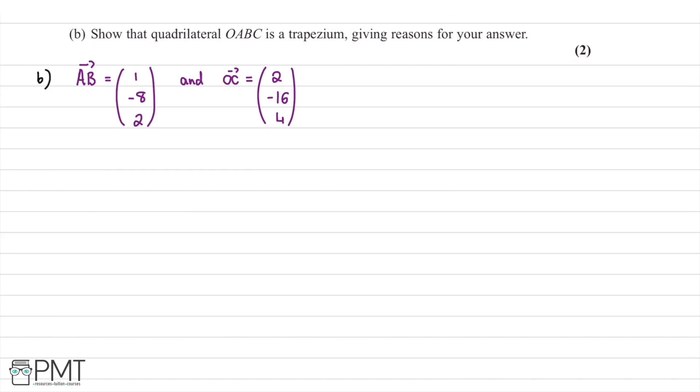In part B of this question, we're asked to show that quadrilateral OABC is a trapezium, and we're asked to give a reason for our answer. We first note down, we remember from part A that vector AB is 1, negative 8, 2. And then we know that OC, which is just position vector C, is going to be 2, negative 16, and 4.